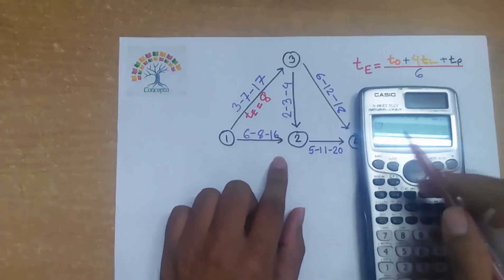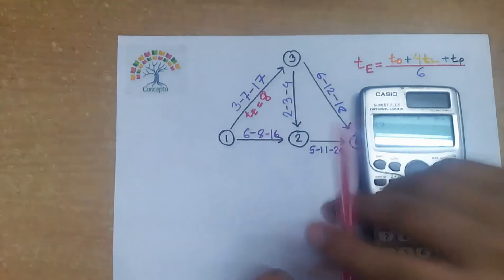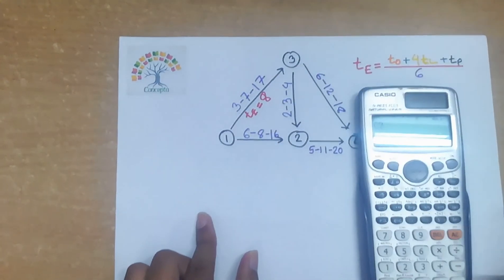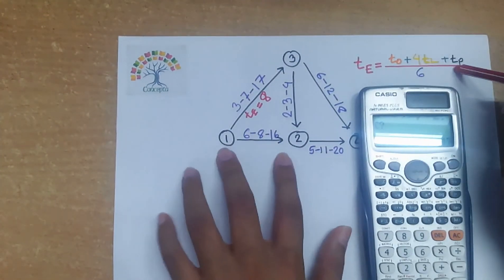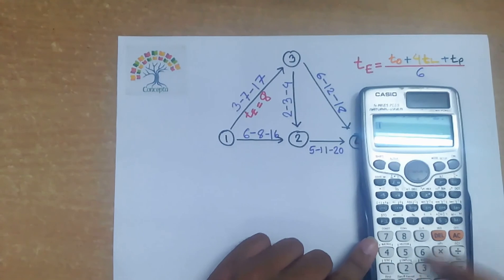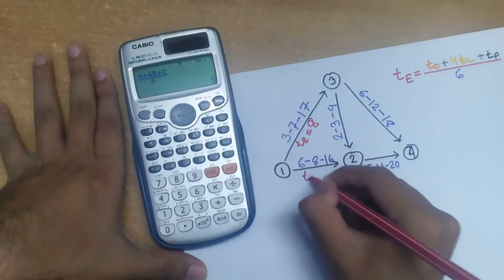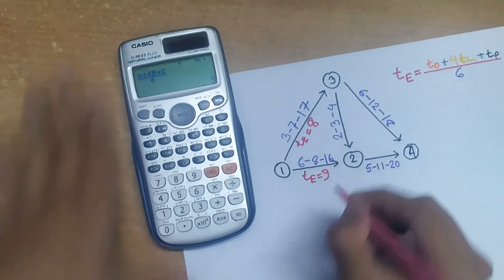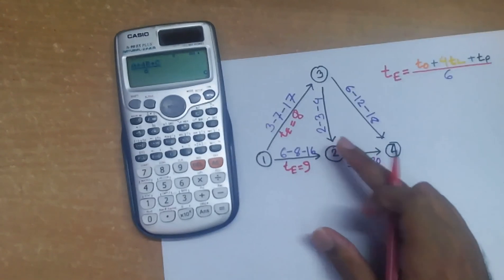And again here we will see in the calculator screen c for 17. This 17 is the value of tp of the previous path 1-3, so this is not a matter of concern for us. You will put your individual value of t0, tl, tp for a particular path. So here in our path 1-2, c is 16. So we'll put 16. Then put equal. Then comes the expected time of path 1-2. So you will write te equals to 9.